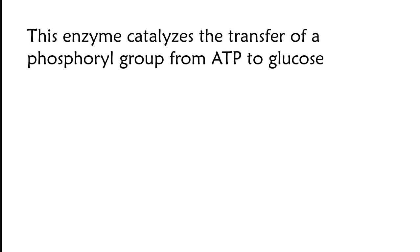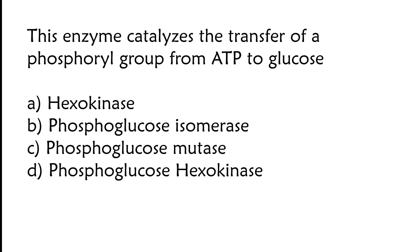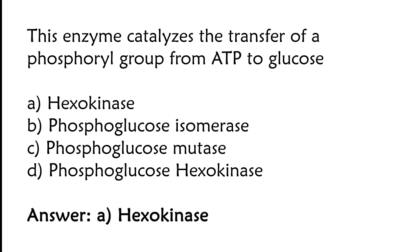These enzymes catalyze the transfer of a phosphoryl group from ATP to glucose. Options: hexokinase, phosphoglucose isomerase, phosphoglucose mutase, phosphoglucose hexokinase. The correct answer is option A. Hexokinase.